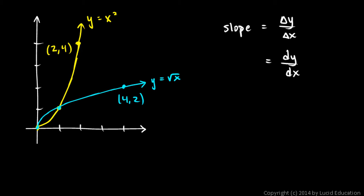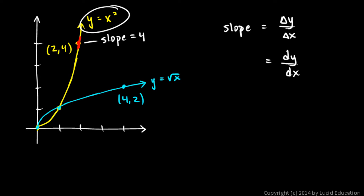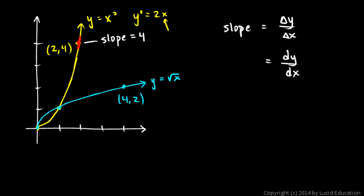You can literally see this on the graph. Think about the slope right here — how steep this graph is right at the point 2 comma 4. You can probably see that the slope equals 4 right here at this point. If you can't see that, just think about the derivative of this function: y prime equals 2x. You can see that's the slope, and when x equals 2, y prime equals 4. So the slope is 4.